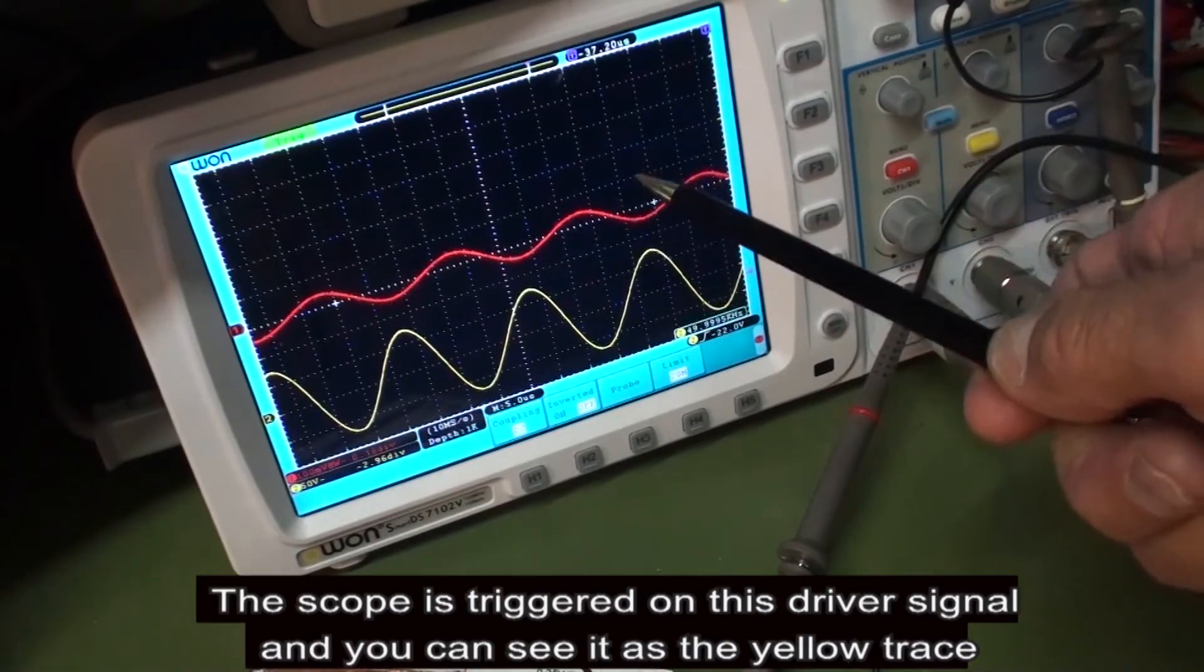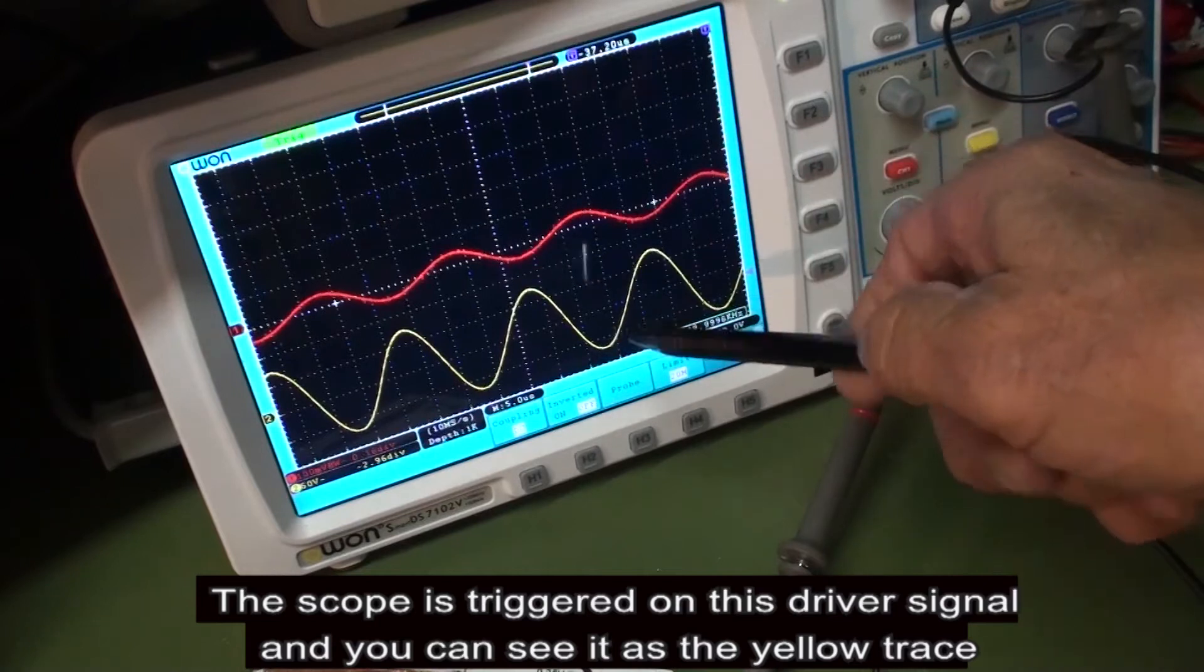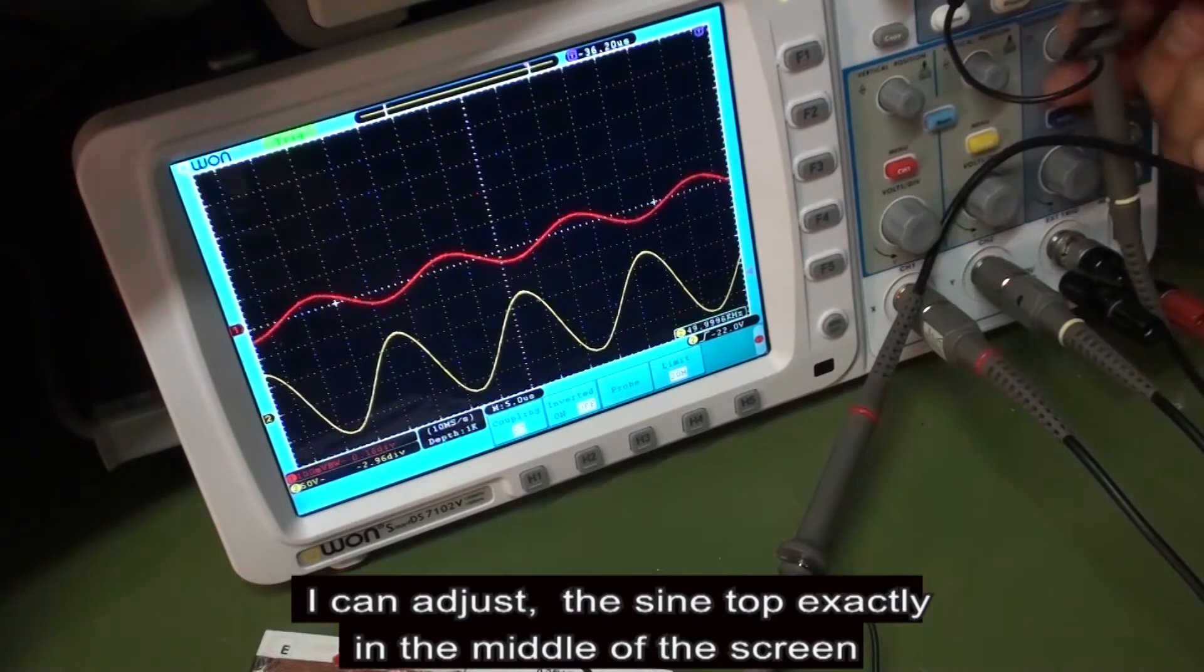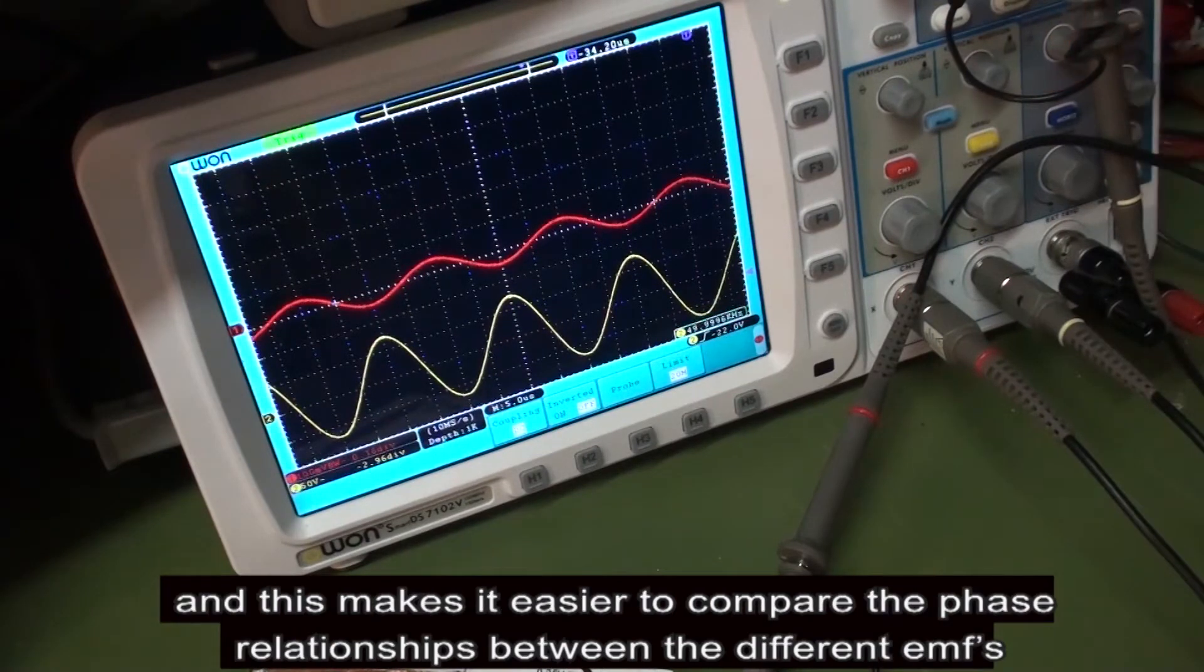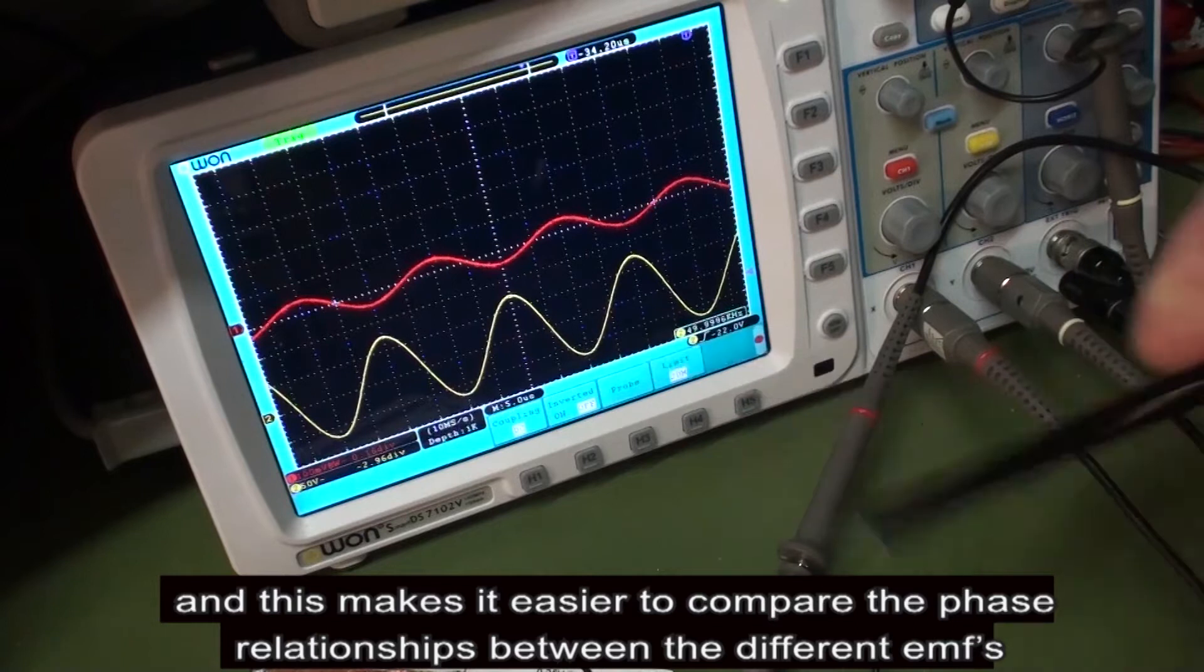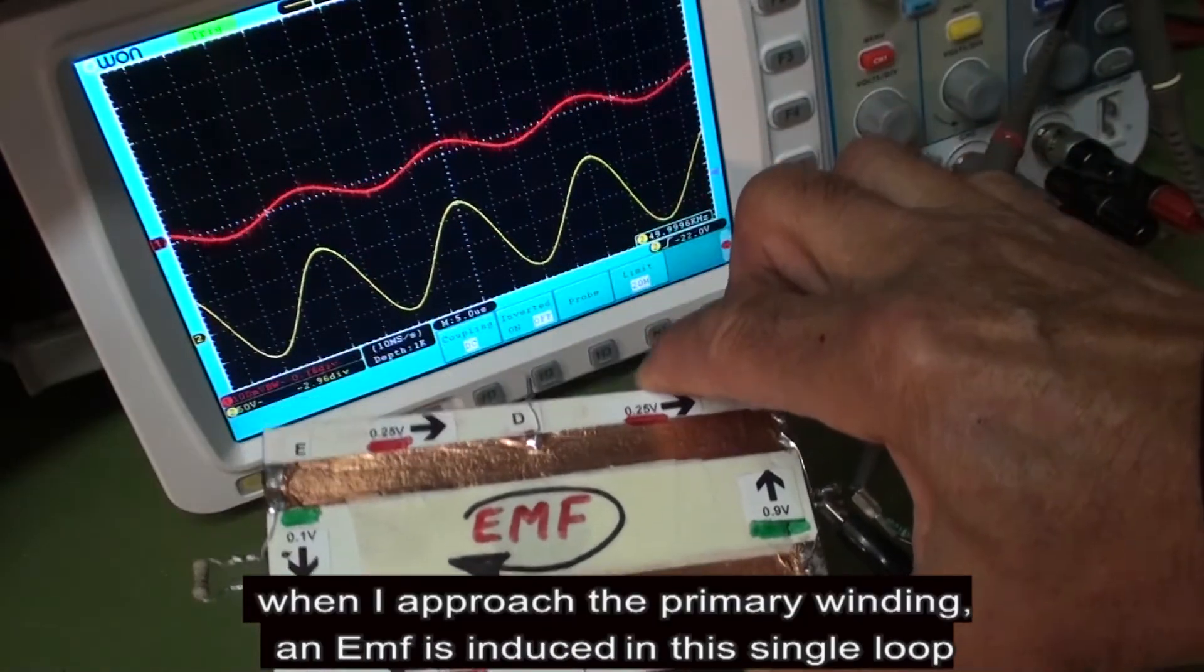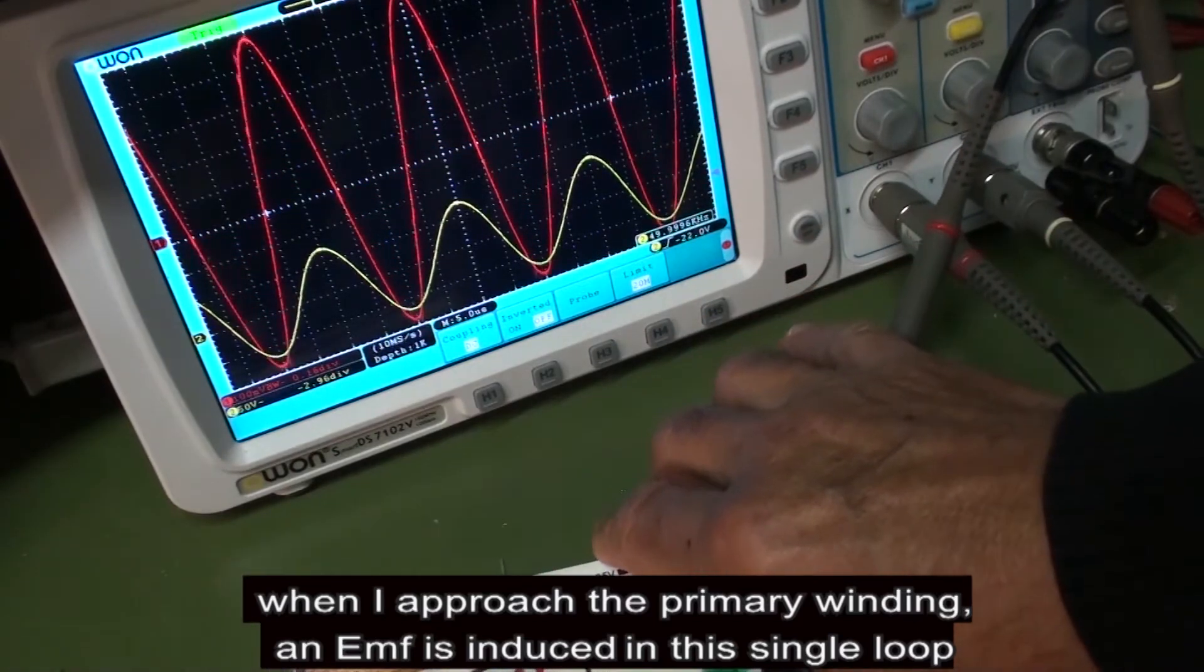I need about 16 volts with an output impedance of 50 ohms to have sufficient dB/dt. The scope is triggered on this driver signal and you can see it as the yellow trace on my second channel. I can adjust the sine top exactly in the middle of the screen, and this makes it easier to compare the phase relationship between the different EMFs.